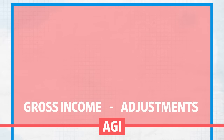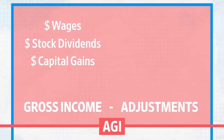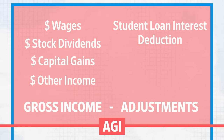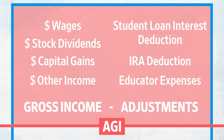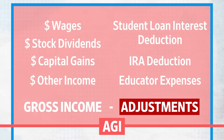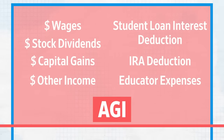Your gross income is a combination of your wages, stock dividends, capital gains, and any other income you might have, like business profits. Adjustments refer to things like interest on student loan payments, contributions to some retirement accounts, and expenses you may have as a teacher, just to name a few. These adjustments are commonly referred to as above-the-line deductions, and once you subtract them from your gross income, you've got your AGI.